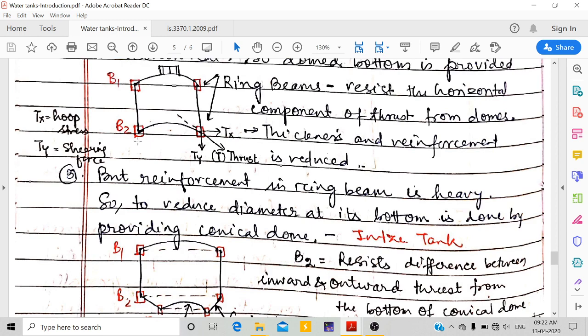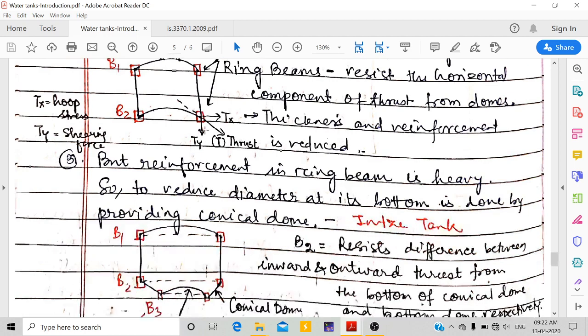In case of flat bottom, the reinforcement was heavy in the bottom slab. They provided dome shape, but for this, the ring beam will be heavy as you can see in the examples we solve in later videos.